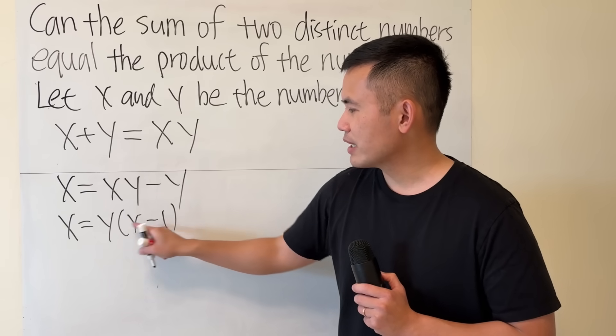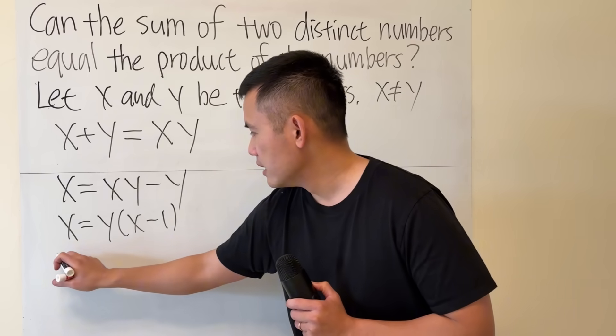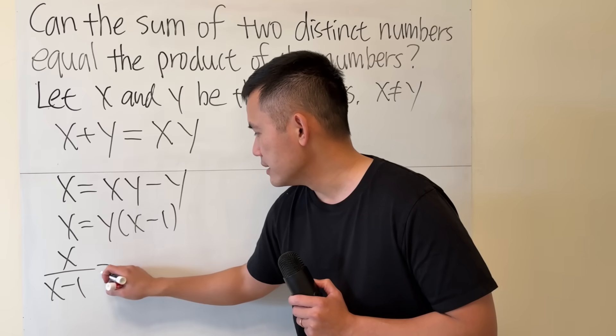And then, this is y times (x-1), so we can divide this to both sides. So x over (x minus 1) equals y.